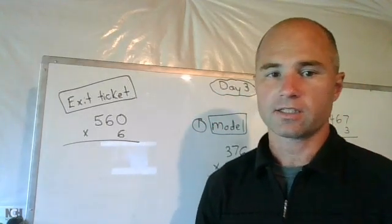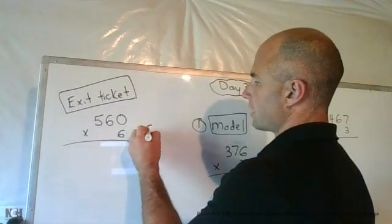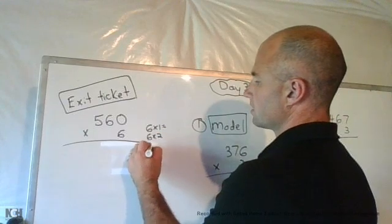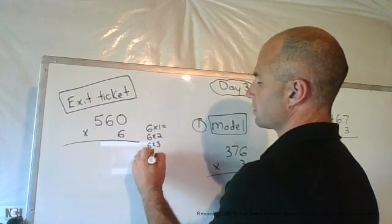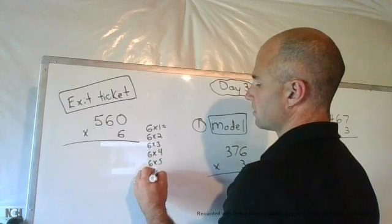So let's go over yesterday's day two exit ticket. We have six times tables we're doing. Six times one, six times two, six times three, six times four, six times five, and six times six.